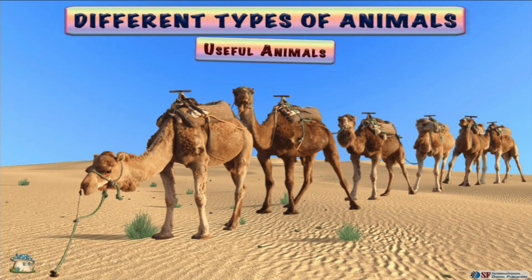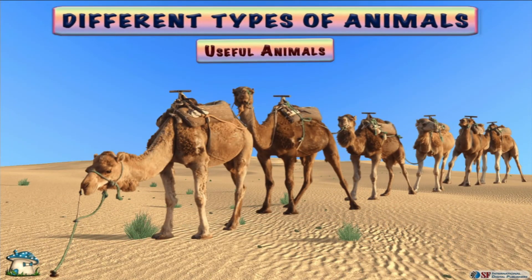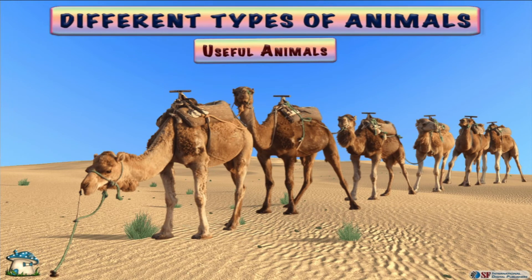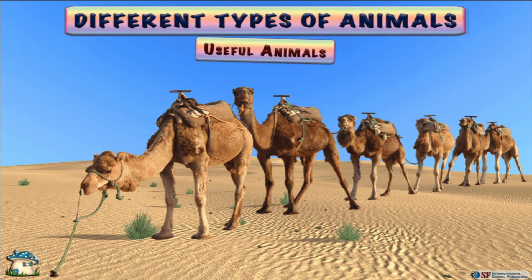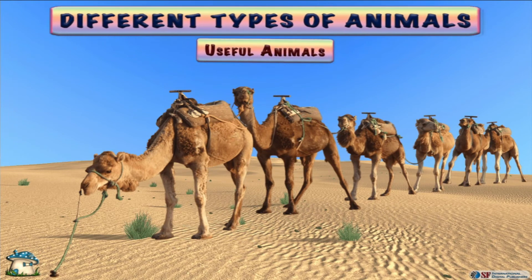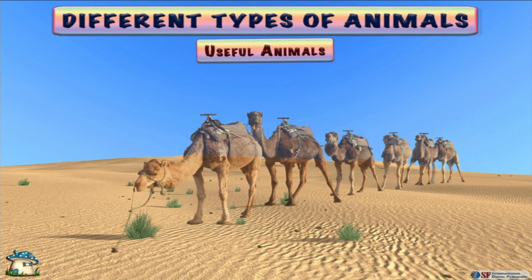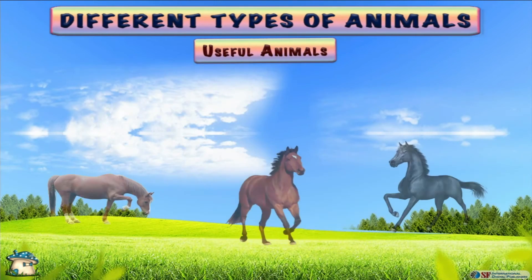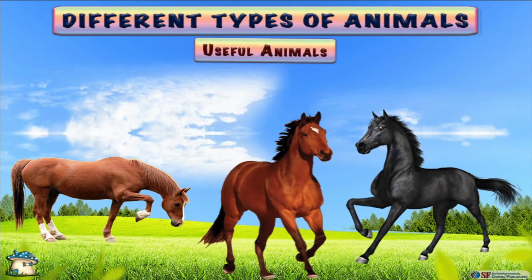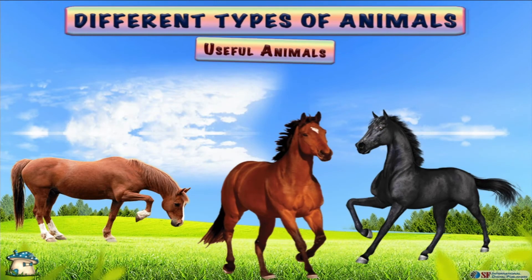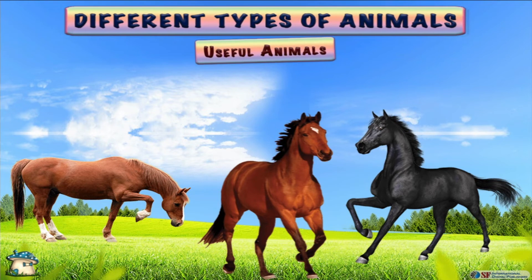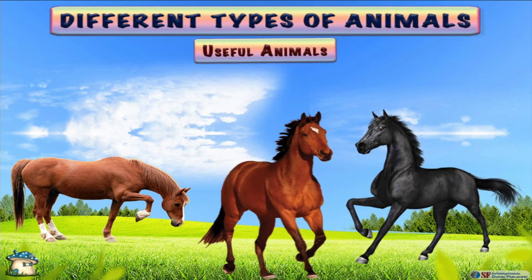Animals like camels are also used for transportation in deserts due to their strong resilience and adaptability to the warm and harsh climate of a desert. We also use horses for transportation due to their speed and ability to cover long distances.